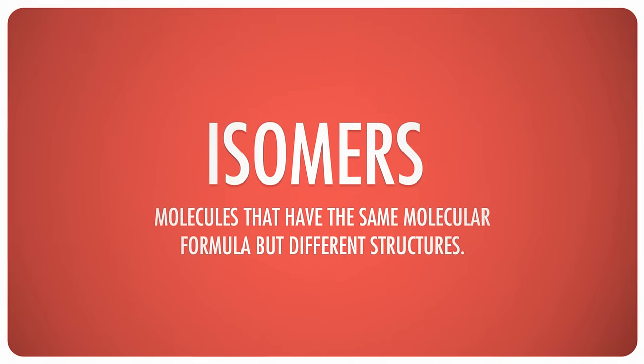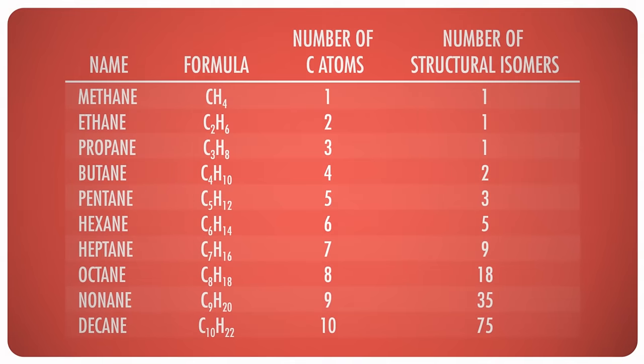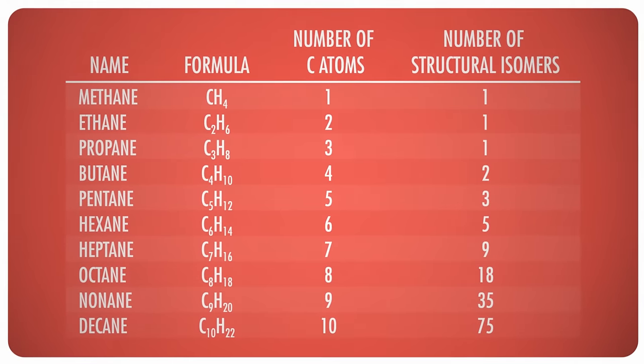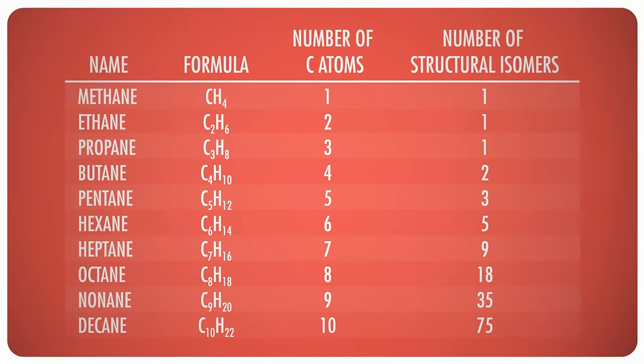These different structures for compounds that have the same molecular formula are called isomers. As you add more and more carbon atoms to the molecule, there are more and more ways you can arrange them. The number of atoms in butane only allows for two isomers — n-butane and isobutane — but pentane, C5H12, has three possible isomers, and hexane, C6H14, has five. Looking at a table of the number of possible isomers, you can see that that escalated quickly. The takeaway is that molecules with the same mass and number of atoms can form different structures, and as their structure changes, their properties also change.